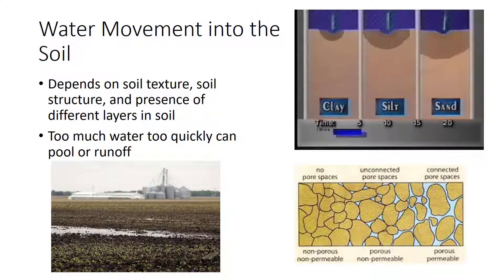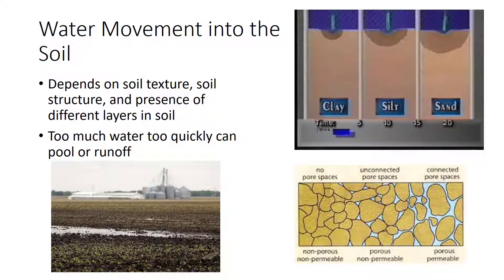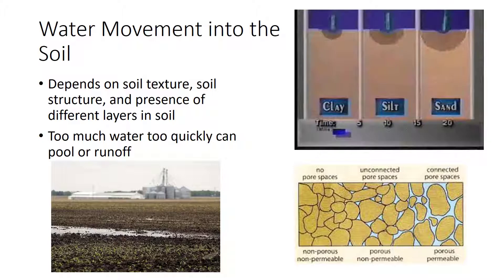Water movement into the soil is very important because if water does not penetrate the soil surface, water logging or drought can occur. The capability of water from precipitation or irrigation to enter the soil depends on soil texture, soil structure, and the presence of different layers in the soil, together with a variety of other factors. If the soil is subjected to water very rapidly, water will pool on the surface and eventually run off. The pooling of water also decreases the capability of water to penetrate the surface by blocking the surface pores.